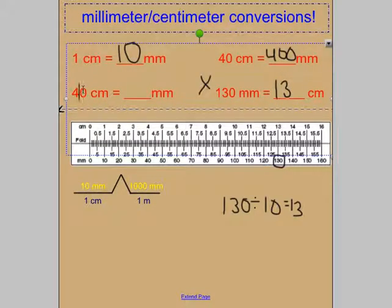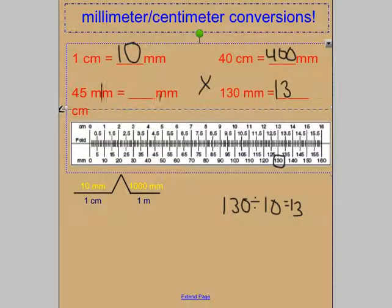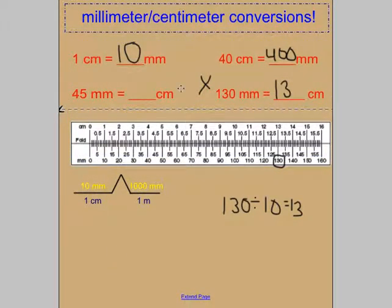Let's try one more. If I had 45 millimeters, how many centimeters would that be? Well, if we go down below and find 45 millimeters, which would be right here, and look up, it would be 4 and a half centimeters. I could also divide 45 by 10 so I could convert to centimeters.